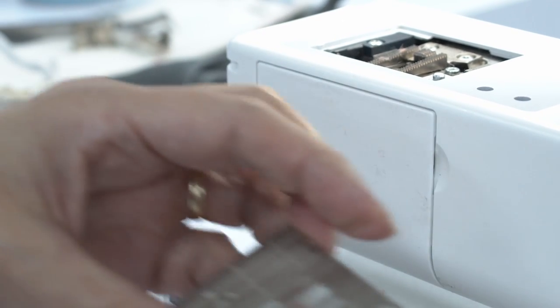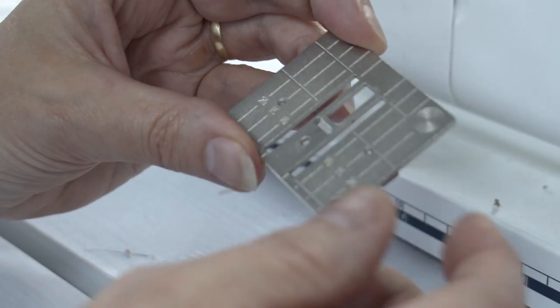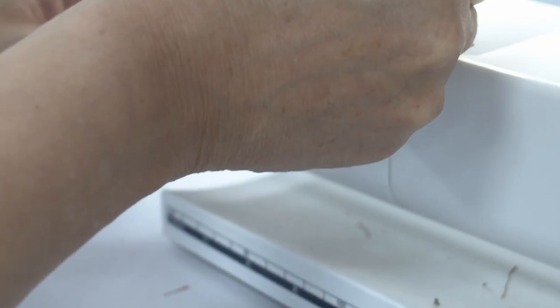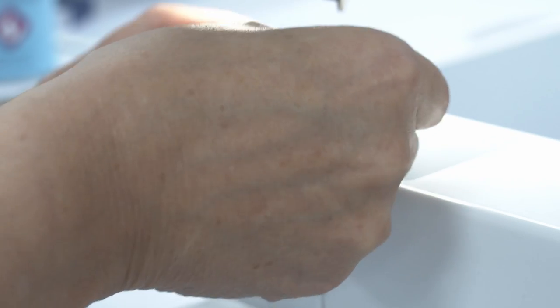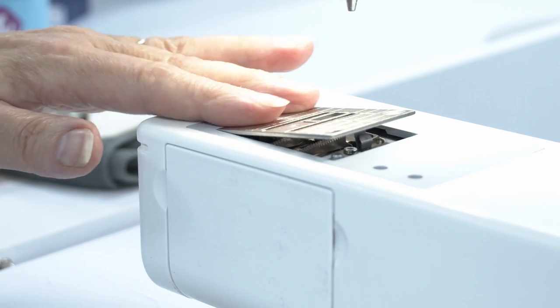I'm now going to put the needle plate back on. I can see that this one's had a little bit of damage here, but it doesn't feel rough, so it should be all right. I'm going to place the needle plate with the target on the back right-hand corner and this side flush with the edge of the aperture.